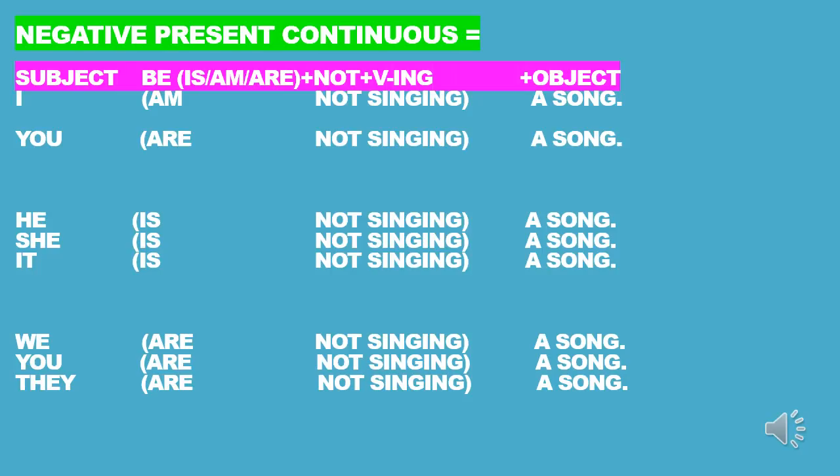Slide 3, Present Continuous Negative. The formula is: subject + verb to be (am/is/are) + not + verb-ING + object. For example: I am not singing a song. To form the present continuous negative, we simply sandwich or insert the negative 'not' between the verb to be and the verb-ING form.